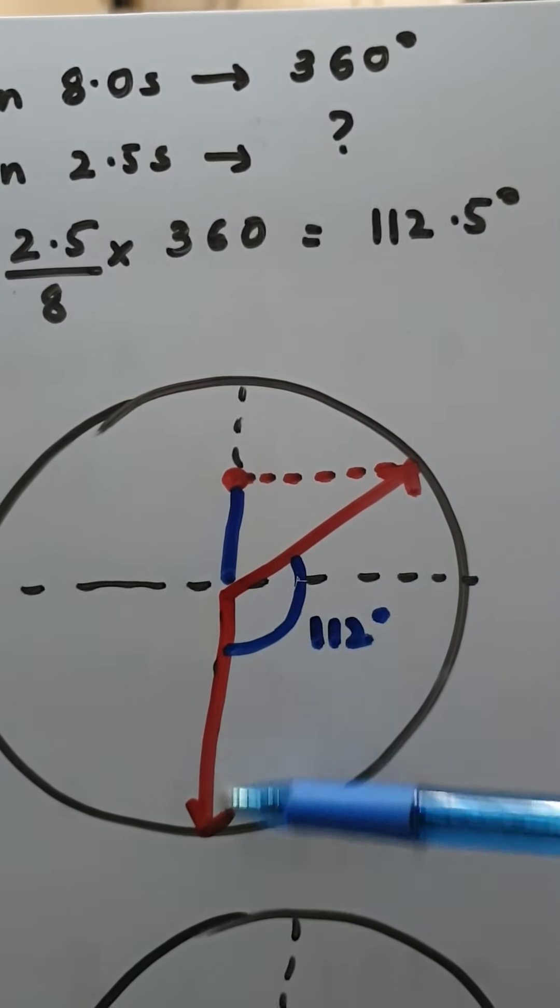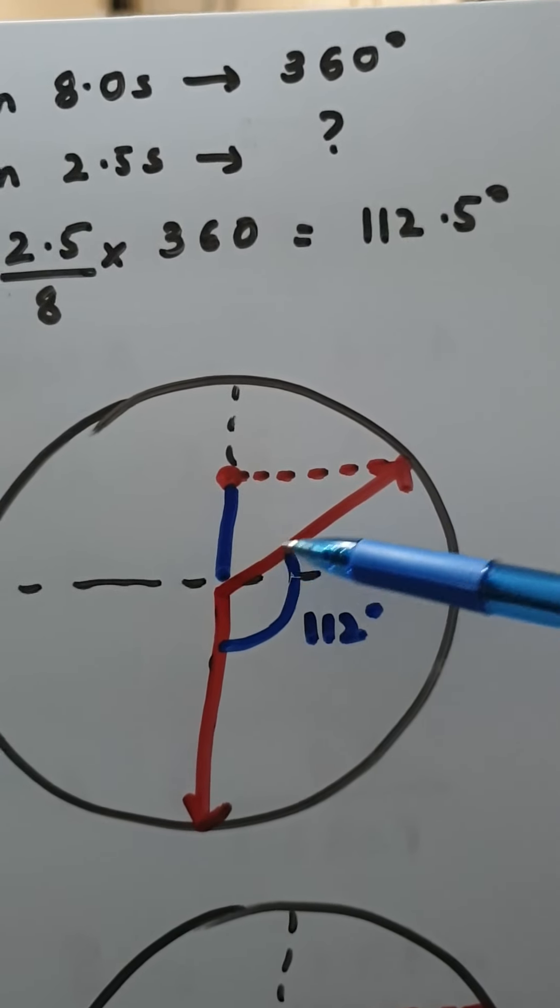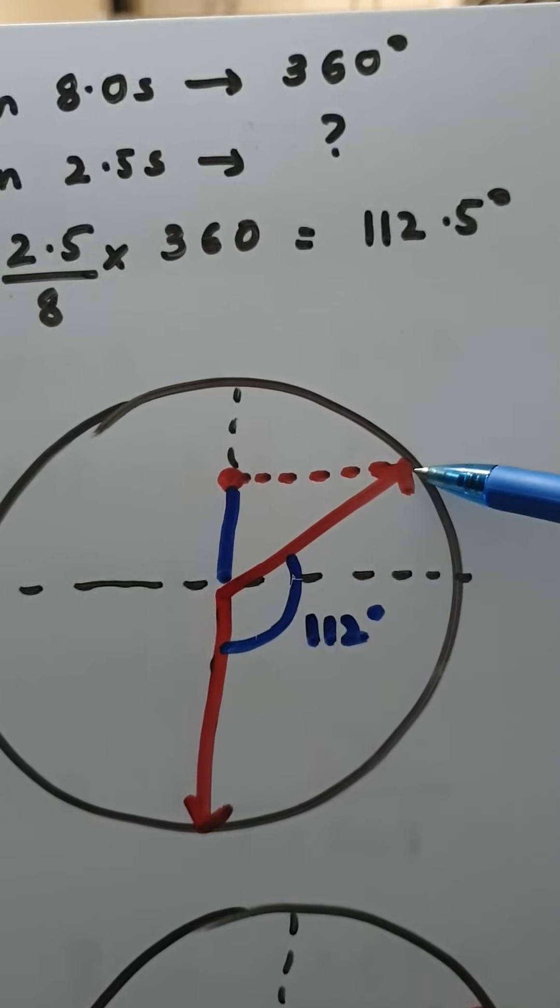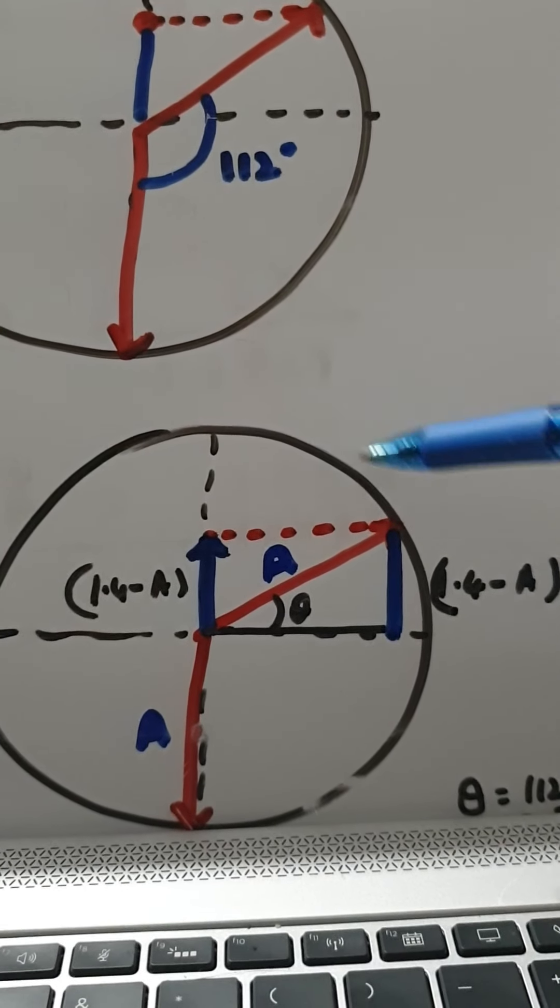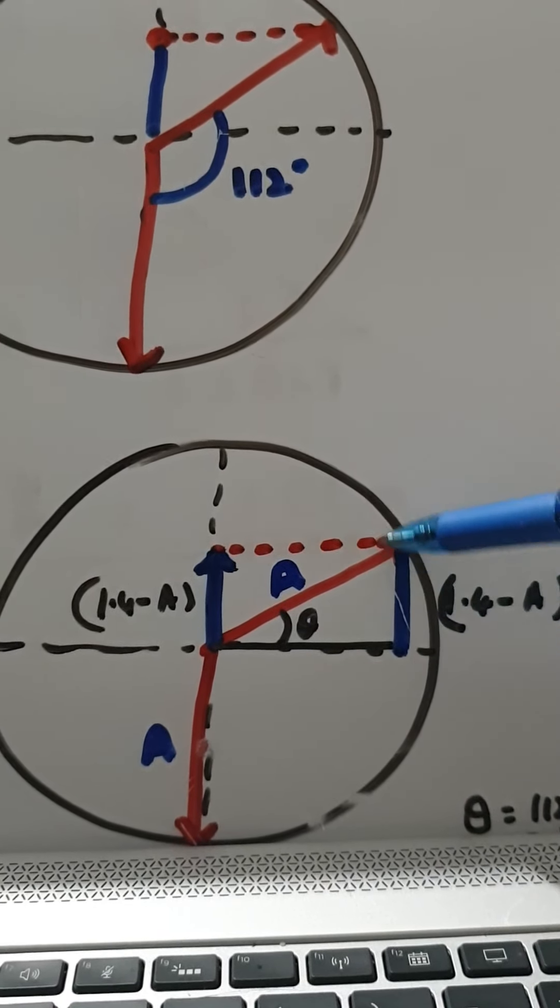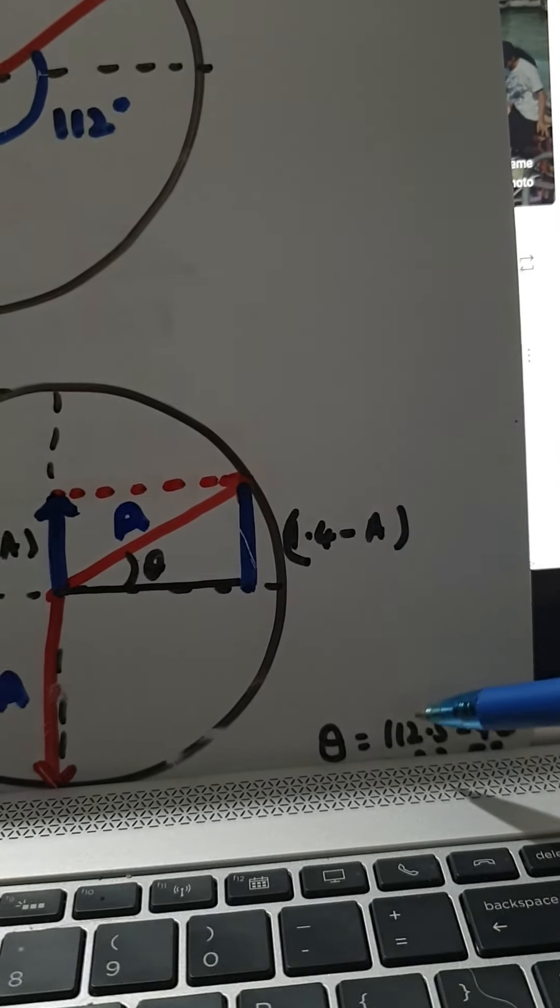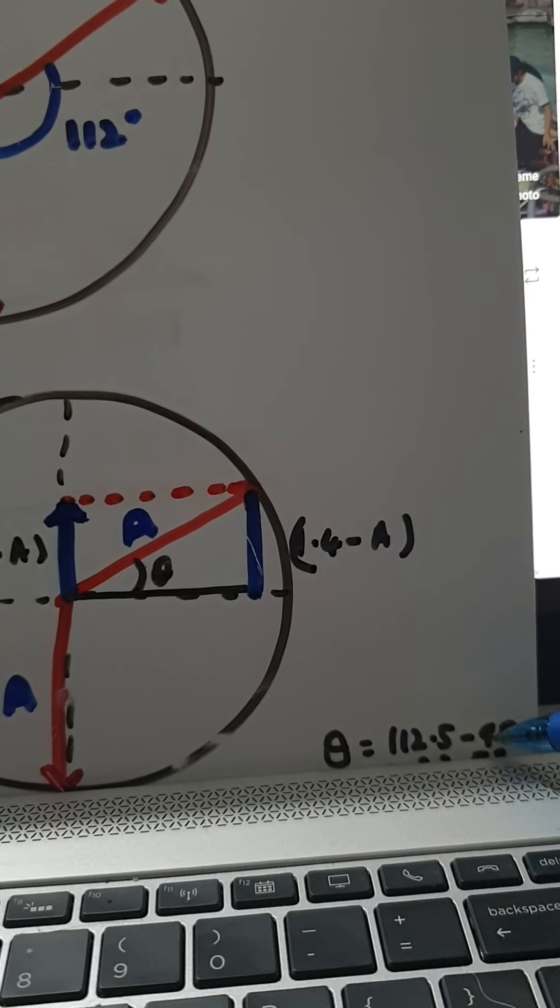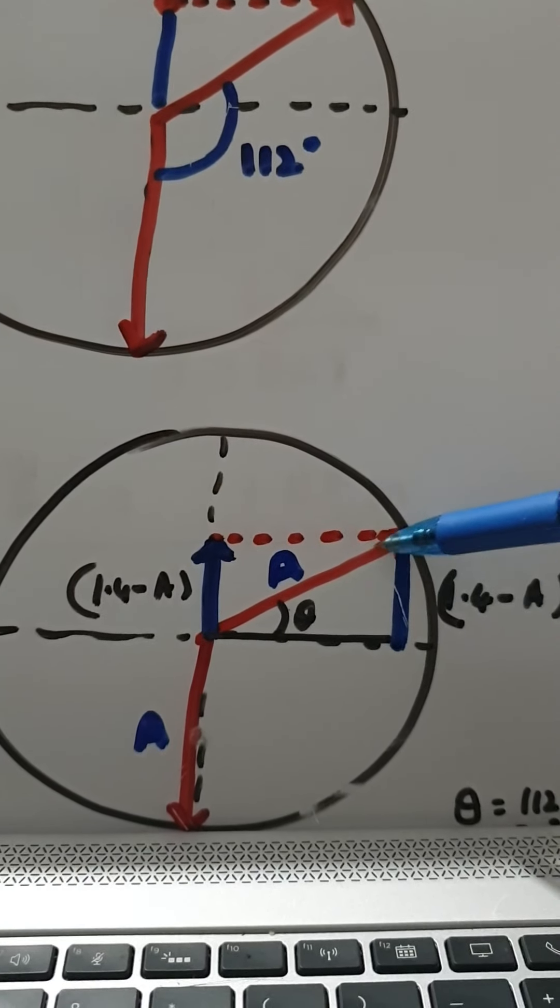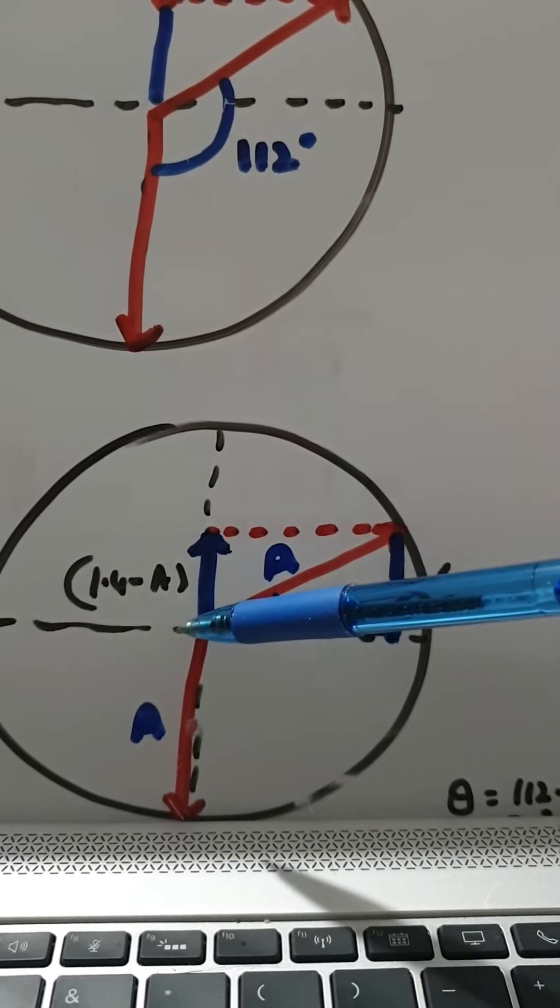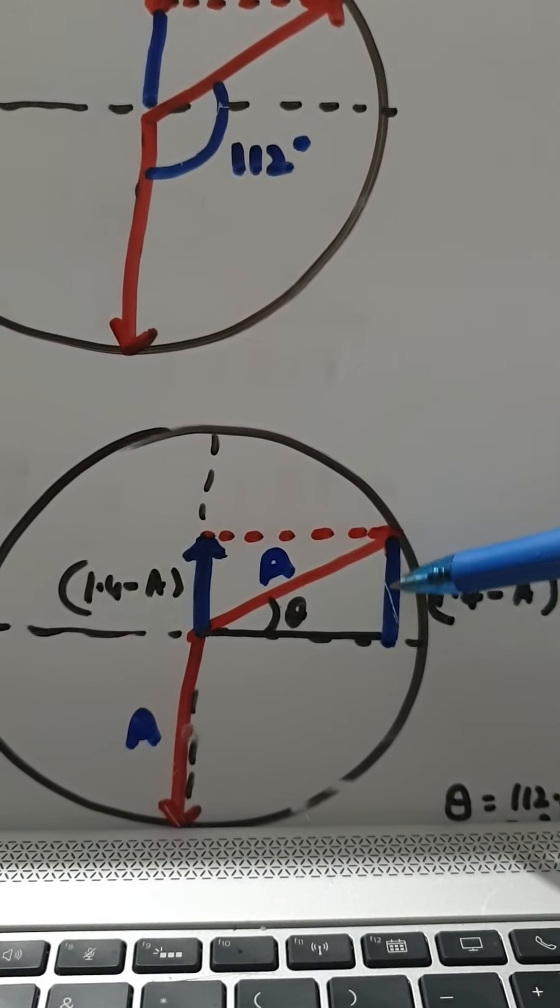Now I've just drawn this diagram over here and then the next thing we have to do is calculate the length of this red arrow which is the amplitude. So if you just look at this diagram in order to do that it's easiest to use a right angle triangle. In this right angle triangle this theta here is actually 112.5 minus 90 which is 22.5 degrees. And then in this right angle triangle this is your amplitude we don't know what that is. This little displacement is 1.4 minus A so which is the same as this.